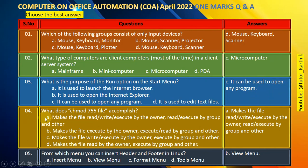Question number 4: What does CHMOD 755 file accomplish? The right answer is A — it makes the file read, write, execute by the owner, and read, execute by the group and others.